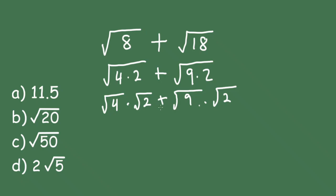Factoring out the square root of 2, we get the square root of 2 times the square root of 4 plus square root of 9. And this simplifies to the square root of 2 times 2 plus 3. So this simplifies to 5 times the square root of 2.